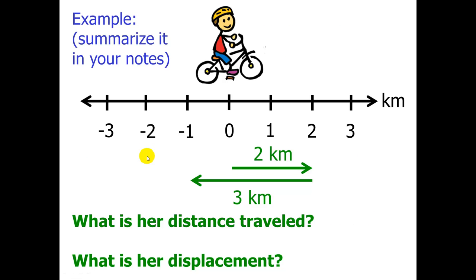Let's take a look at an example. You don't have to copy this example, but I would like you to write a summary of what the main point of it is. You have a girl riding her bike. She's riding in one line, so you could say it's one-dimensional motion. She's starting at the zero. She travels two kilometers to the right, three kilometers to the left. What is her distance traveled? It is the sum of those two, five kilometers.